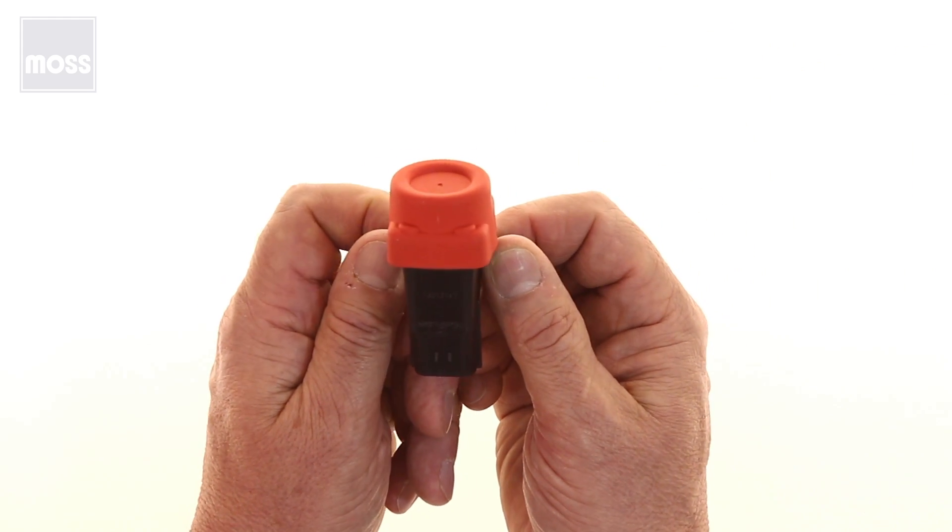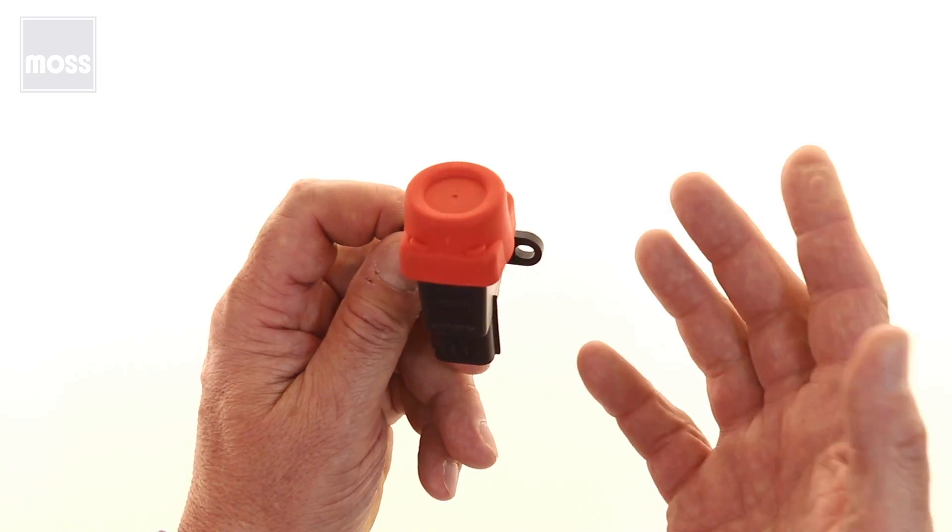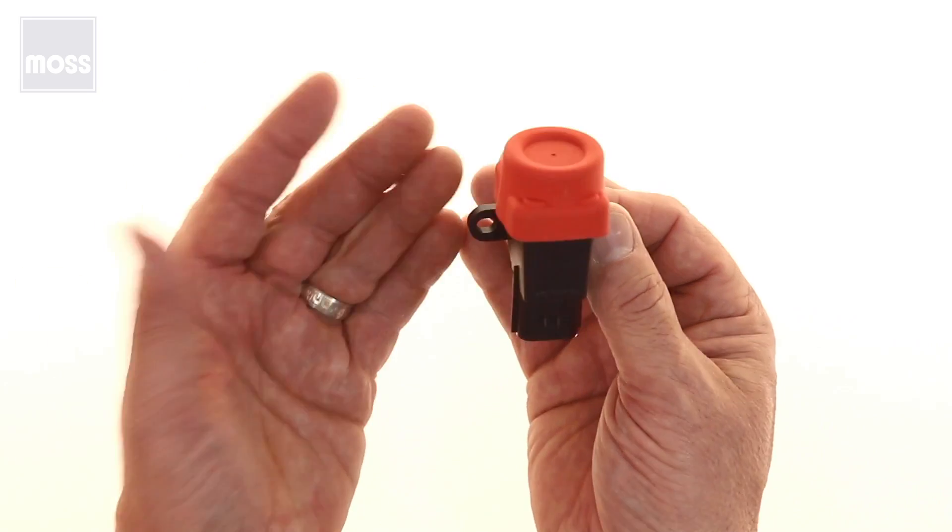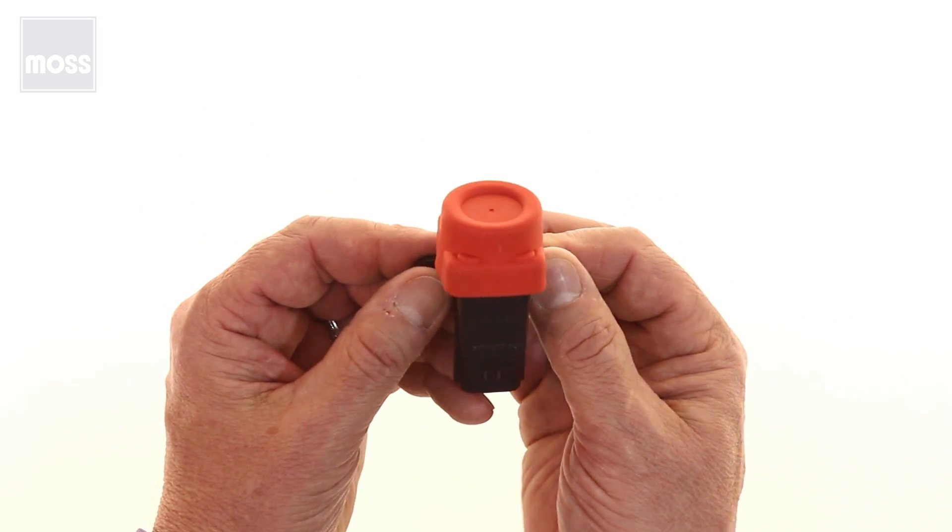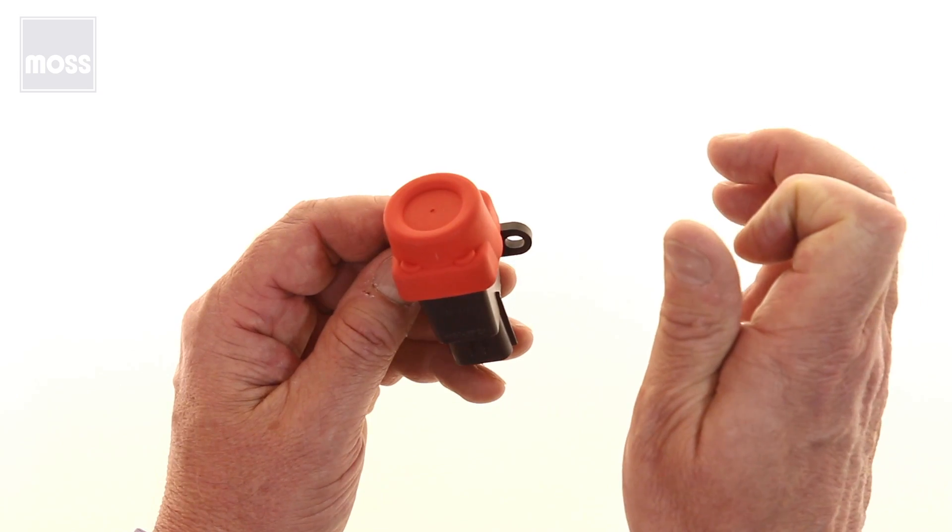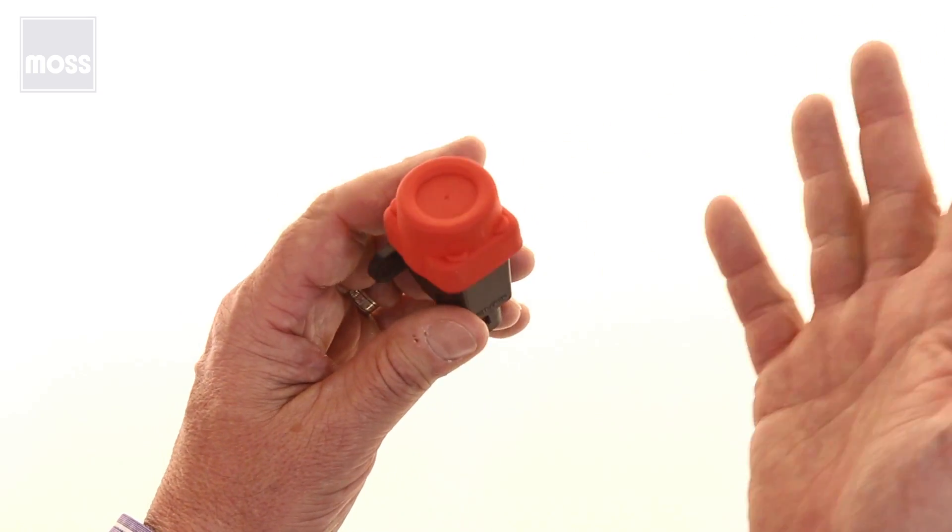If your car has an inertia switch, it'll be in the wiring diagram. Why not take a minute to learn where it is? For example, if you've got a left-hand drive late model MG, MGB, it's going to be by the driver's left knee. Then you can easily reset it if you have to. In fact, if you don't hear your fuel pump running at any time, why not just reach in and push the button? It's easy to do and it's one less thing to be concerned about.